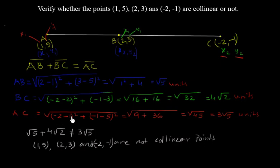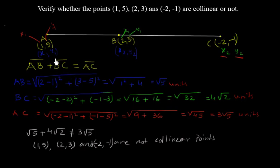So this is how we check collinearity using the distance formula. Children, remember: whenever they ask whether given points are collinear or not, name the points A, B, and C, then check the condition AB plus BC equals AC. If this condition is satisfied, the points are collinear; if not, they are not collinear points. Thank you.